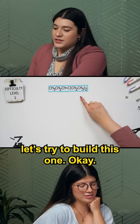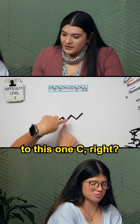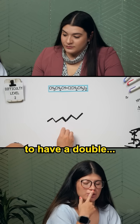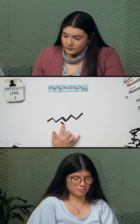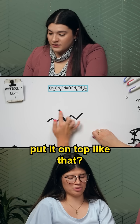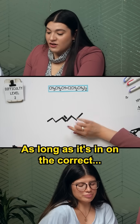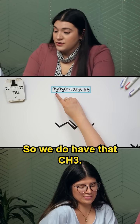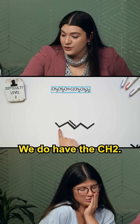So let's try to build this one. Because they're all bonded to this one C, this one would have to have a double bond between this one and this one. Does it look like this? It would look like that — that's an option. It doesn't matter where you place it, as long as it's on the correct carbon with the double bond. We do have that CH3, and we do have the CH2.